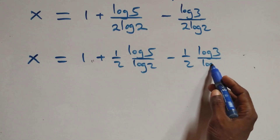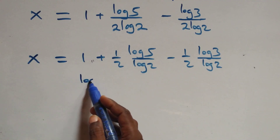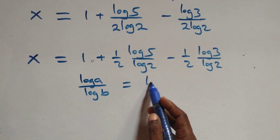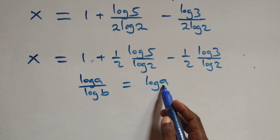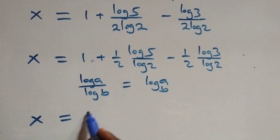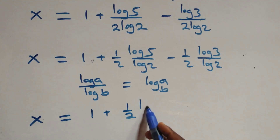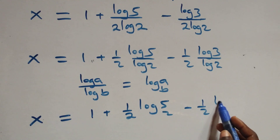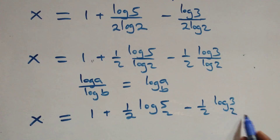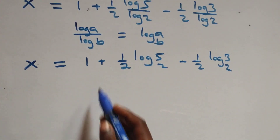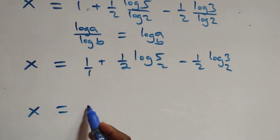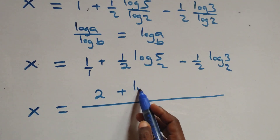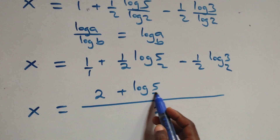We apply the change of base formula: log a over log b is the same as log a to base b. So x equals to 1 plus one-half log 5 base 2 minus one-half log 3 base 2. Bringing this together as one fraction over 2, we get x equals to (2 plus log 5 base 2 minus log 3 base 2) over 2.